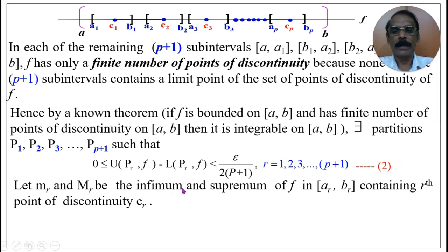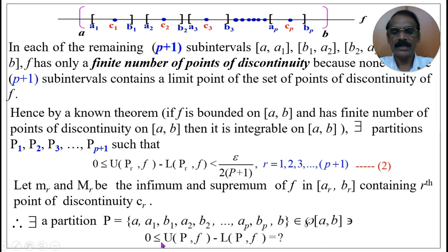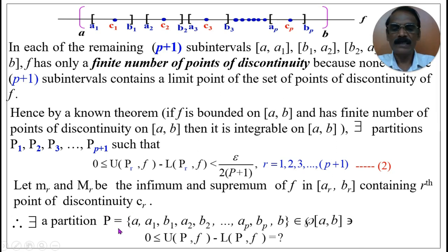Let mᵣ and Mᵣ be the infimum and supremum of f in the closed interval [aᵣ, bᵣ] containing the r-th point of discontinuity cᵣ. Therefore, there exists a partition P containing the points a, a₁, b₁, a₂, b₂, …, aₚ, bₚ, b, belonging to the set of all partitions of [a, b], and this partition P consists of 2p+2 partition points.